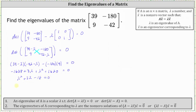That looks like we can factor. The factors of lambda squared are lambda and lambda, and the factors of negative 18 that add to positive 3 are positive 6 and negative 3.